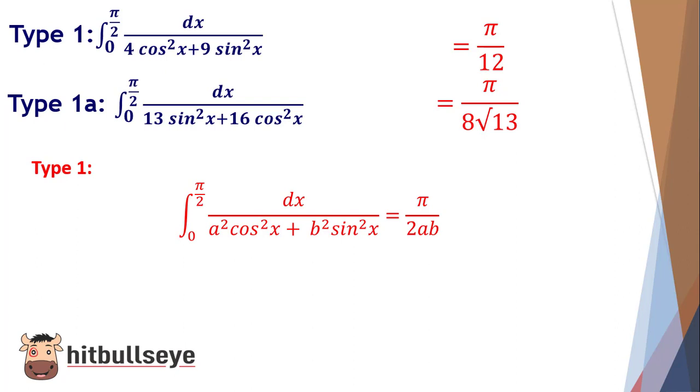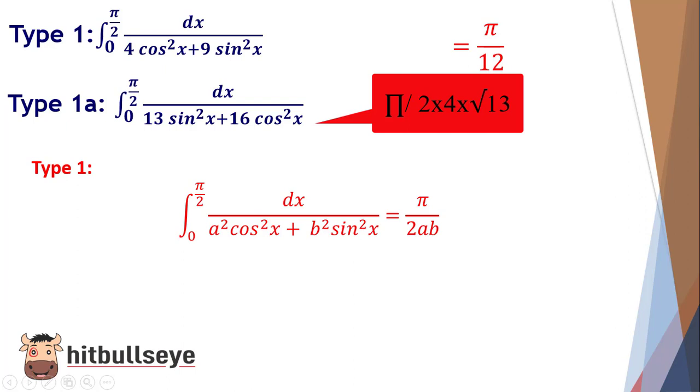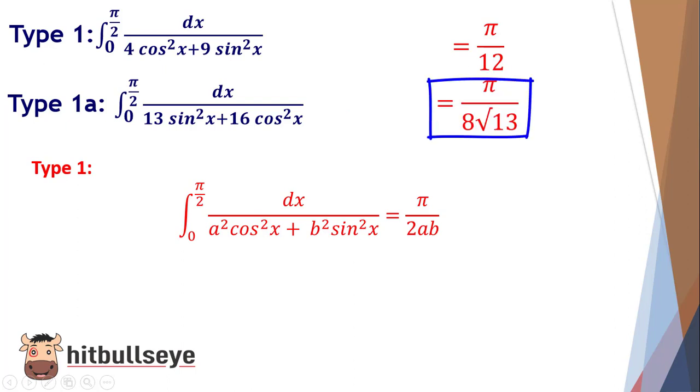Coming to the second part, you can see that 16 is a perfect square for 4 but 13 is not. So we can write our answer as π/(2×4×√13) and that will give you π/(8√13).